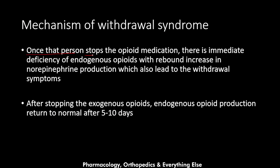Once that person stops opioid medication, there is an immediate deficiency of endogenous opioids with a rebound increase in norepinephrine production — as a reaction to the opioid deficiency. This rebound in norepinephrine leads to withdrawal symptoms. So the two mechanisms are disrupted cellular signaling and excessive norepinephrine production. After stopping exogenous opioids, endogenous opioid production returns to normal after five to ten days.